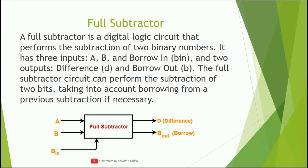Next is the full subtractor. A full subtractor is again the subtraction of two bits, but now a borrow has already been given to the previous values. For example, to subtract one-one-zero minus one-one: first, zero minus one — as already discussed, this can be done with a half subtractor — gives difference one and borrow one. So this activity can be performed using a half subtractor.